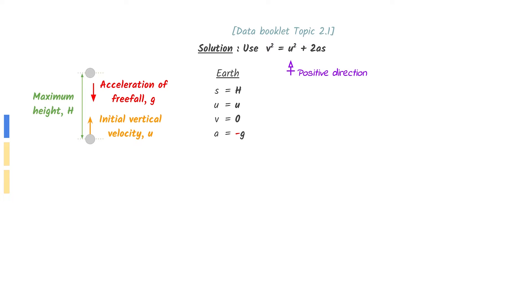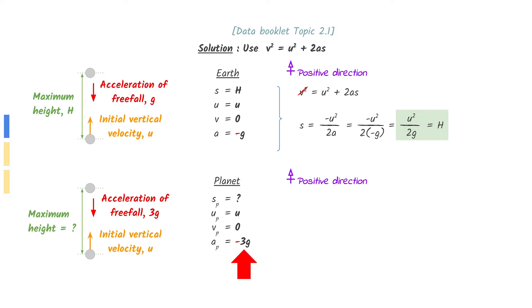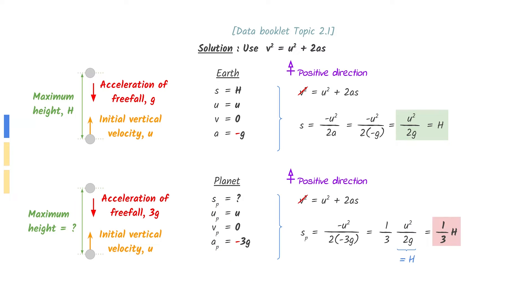First, let us focus on the vertical movement of the ball. The initial vertical velocity is u and the acceleration of free fall is g. The velocity at maximum height is 0. Use v squared equals u squared plus 2as to find the maximum height h in terms of u and g. Do the same calculation for the planet, but this time the acceleration is tripled. Substitute in for h and we can see that the new maximum height is a third of the original maximum height.